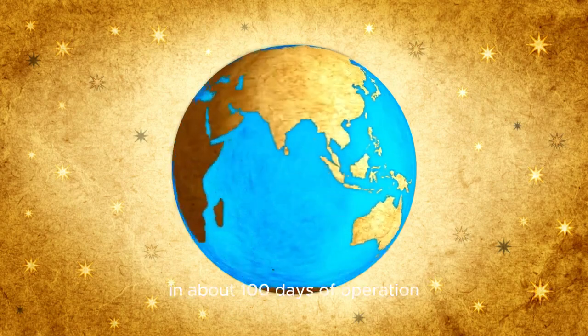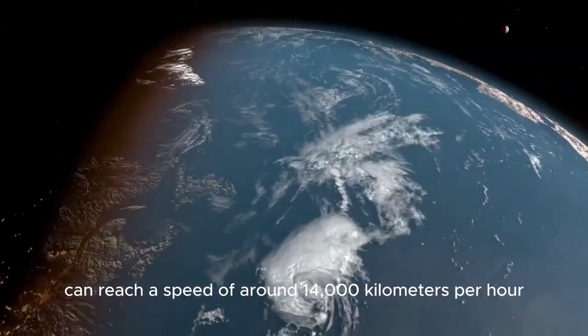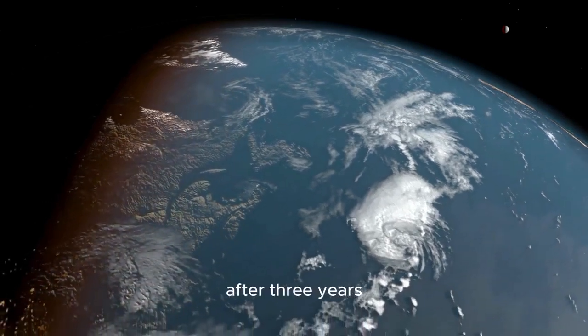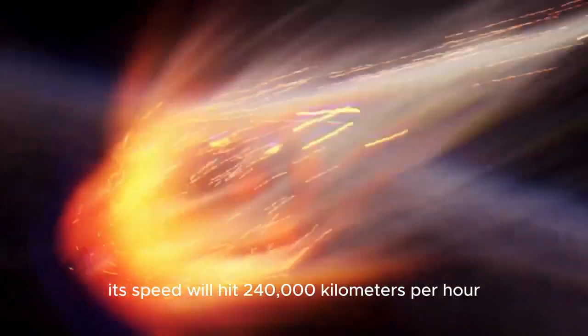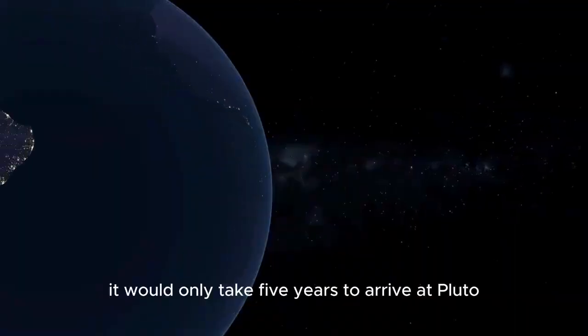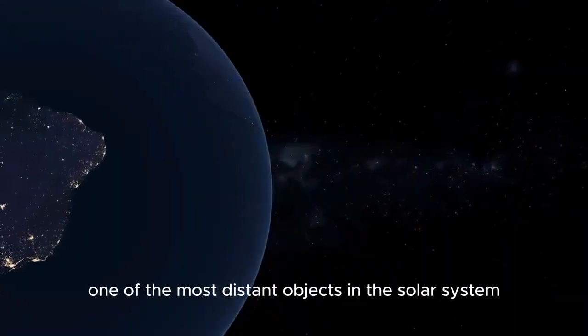In about 100 days of operation, the solar sail can reach a speed of around 14,000 kilometers per hour. After three years, its speed will hit 240,000 kilometers per hour, and then it would only take five years to arrive at Pluto, one of the most distant objects in the solar system.